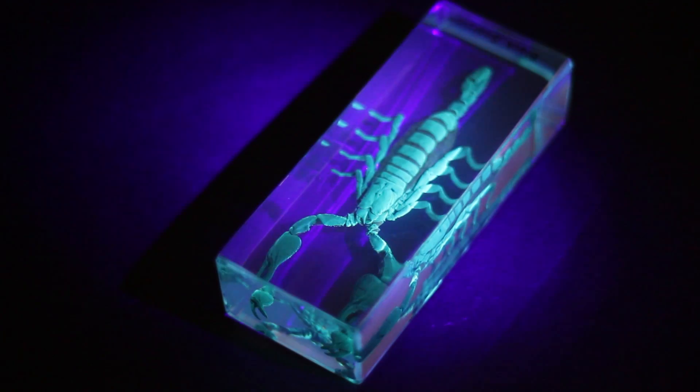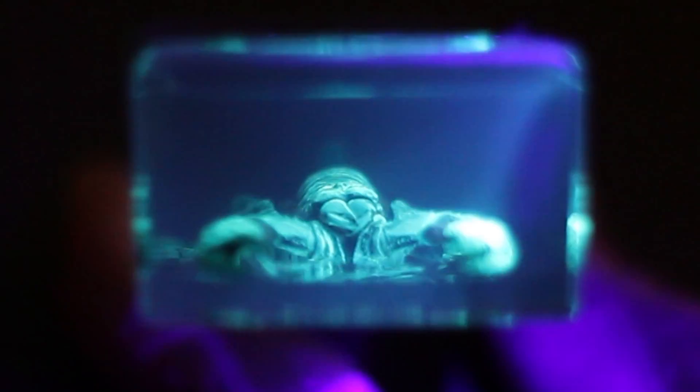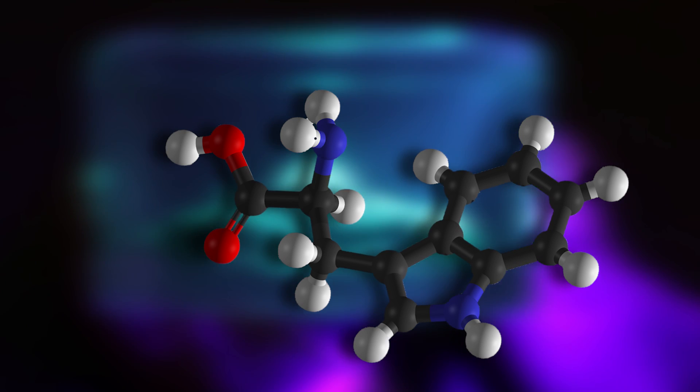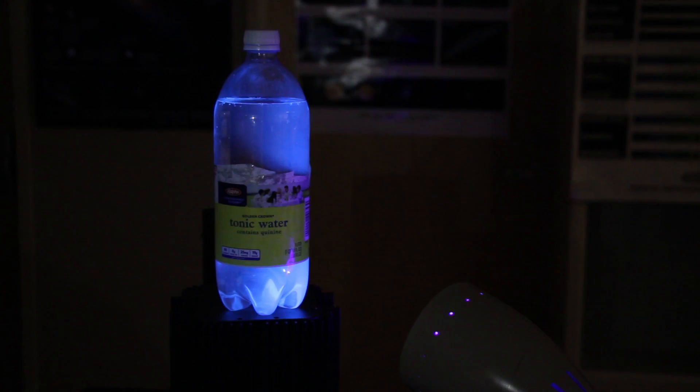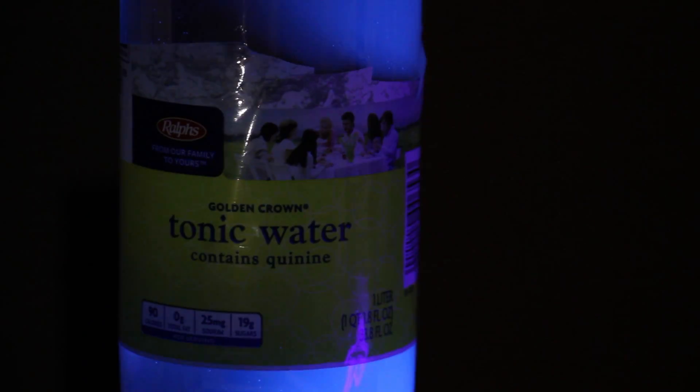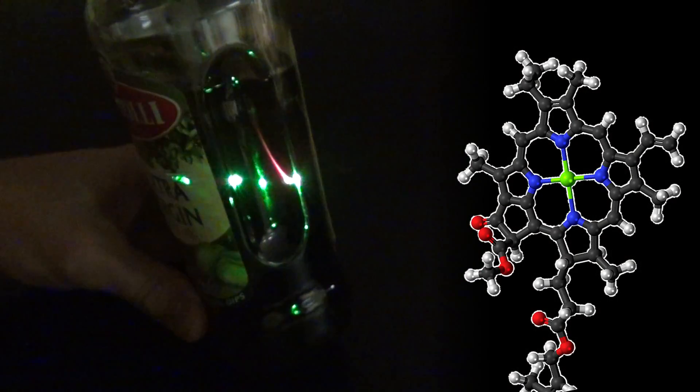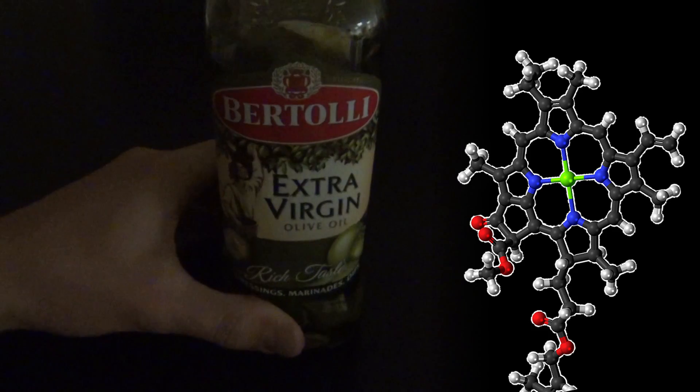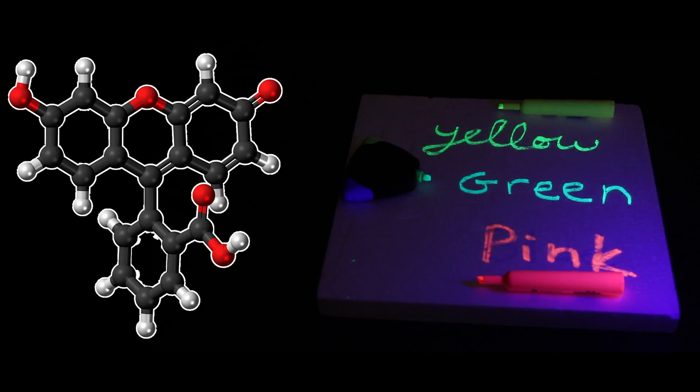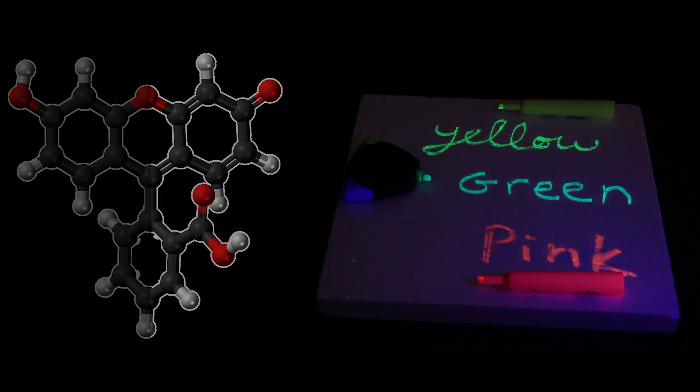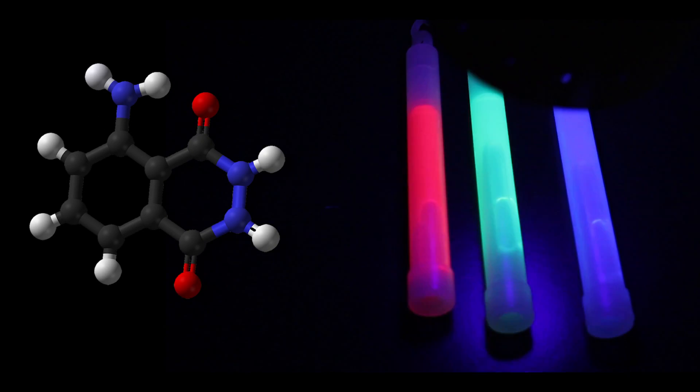Check it out. This scorpion fluoresces in UV light. Fluorescence is common among organic molecules. In this case, it's the amino acid tryptophan. Most fluorescent organics contain similar structures of multiple carbon rings. For example, the quinine found in this tonic water. Or the chlorophyll in this extra virgin olive oil. Or the fluorescein in these highlighters. Or the luminol in these glow sticks.